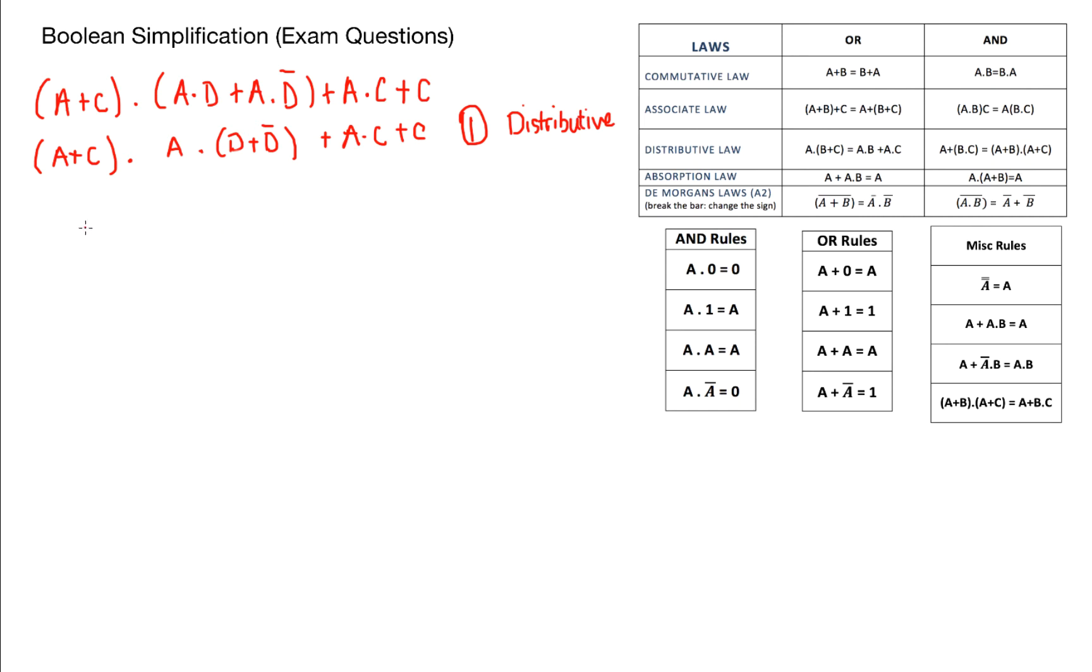The next rule I've spotted is D or not D equals 1 and you might ask me how I've spotted that. Well the OR rules on my right hand side I can clearly see there that A or not A equals 1. It doesn't matter what term I use. I could use A, B, C, D, E, F, G, anything I like. It doesn't matter. The rule still applies. So I'll make sure I write the rest of my term and I'll get one mark for that.